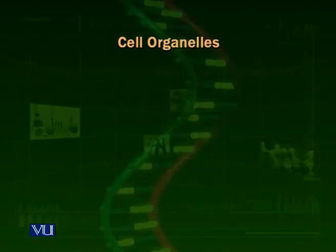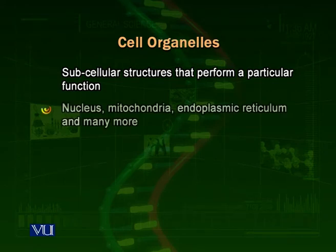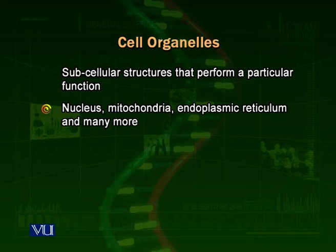We are going to talk about the cells, organelles, and different types of organelles present inside the cell. Organelles are sub-cellular structures. For example, the mitochondria, as we have seen in the previous diagram, the ribosomes which make proteins, the lysosomes, vacuoles, and so on.